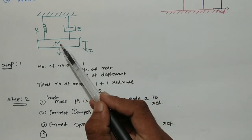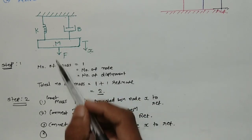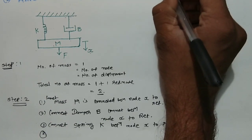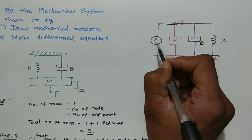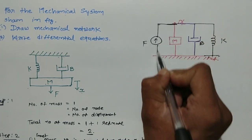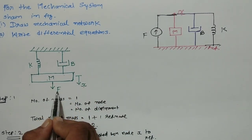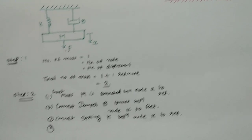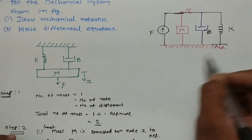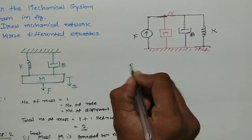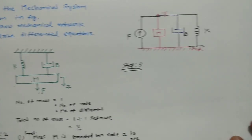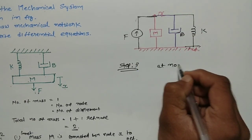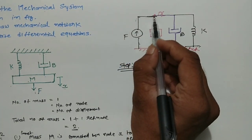Force is applied to the mass only, so there is some displacement. The force direction is towards node X, so I am applying force F towards node X. That completes step number two — drawing the mechanical network. Now we move to step number three, where we will identify incoming and outgoing forces and write the differential equation at node X.